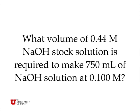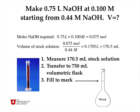What volume of a 0.44 moles per liter solution would be required to make 750 milliliters of sodium hydroxide solution at 0.1 molar? The number of moles required is 0.75 liters times 0.1 moles per liter, which is 0.075 moles of sodium hydroxide. From the stock solution, the volume required is 0.075 moles divided by 0.44 moles per liter, giving 0.1705 liters, or 170.5 milliliters. The procedure is to take 175 milliliters of stock solution, transfer it to a volumetric flask, and fill to the mark.